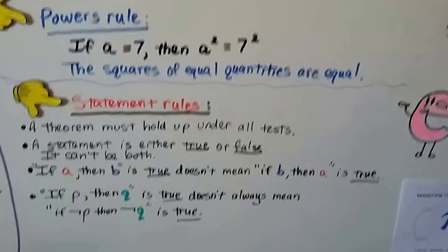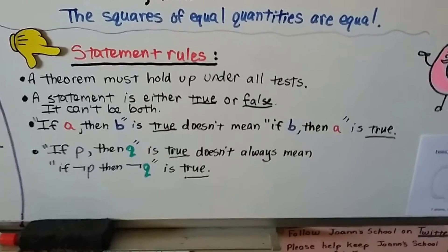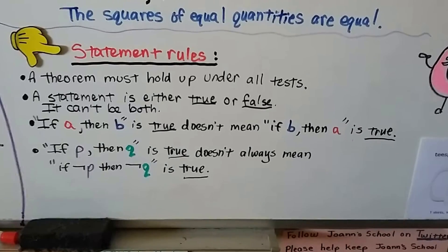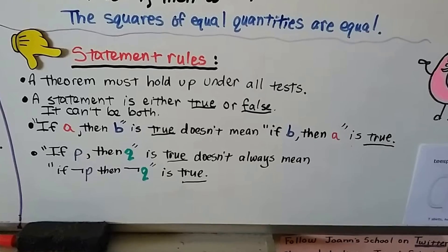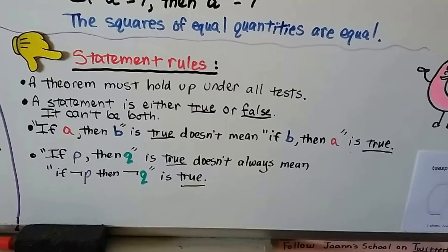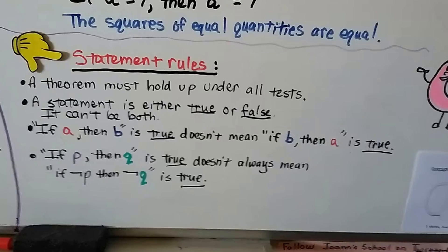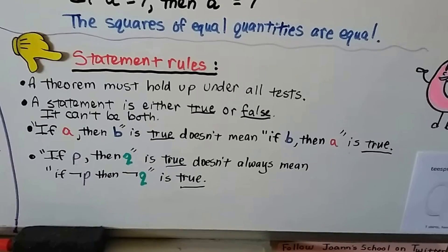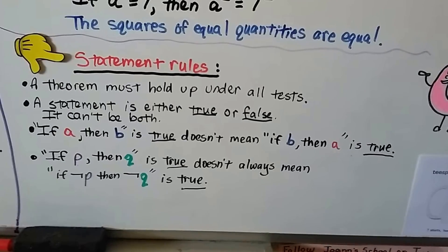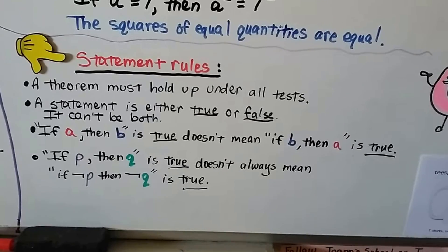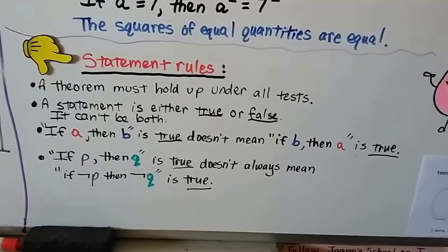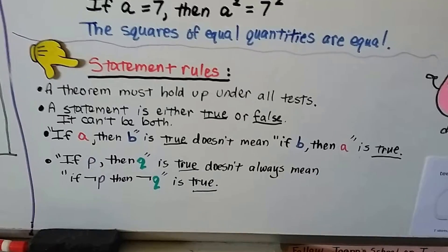These are statement rules. A theorem must hold up under all tests. A statement is either true or false — it can't be both. If A then B is true does not mean if B then A is true; the converse doesn't have to be true. If P then Q is true doesn't always mean if not P then not Q is true.